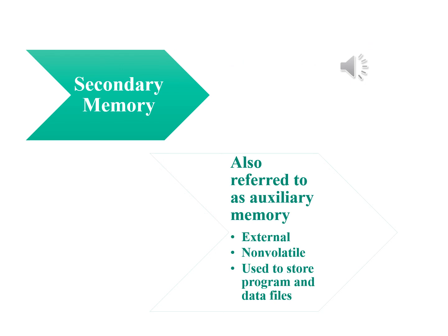The cache is not usually visible to the programmer or indeed to the processor. It is a device for staging the movement of data between main memory and processor registers to improve performance. The three forms of memory just described are typically volatile and employ semiconductor technology. The use of three levels exploits the fact that semiconductor memory comes in a variety of types which differ in speed and cost. Data are stored more permanently on external mass storage devices, of which the most common are hard disk and removable media such as removable disk, tape, and optical storage. External non-volatile memory is also referred to as secondary memory or auxiliary memory. These are used to store program and data files, and are usually visible to the programmer only in terms of files and records, as opposed to individual bytes or words. A hard disk is also used to provide an extension to main memory known as virtual memory, which will be discussed later in the course.